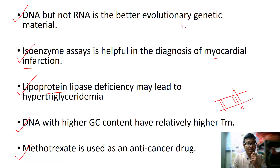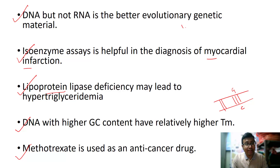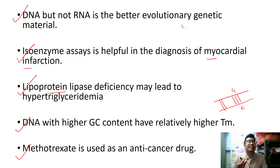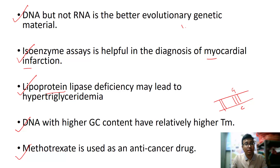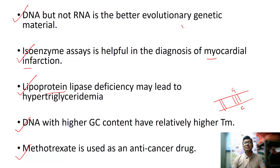Cancer cells require rapid DNA replication and cell growth, so depriving them of tetrahydrofolate prevents replication and ultimately causes cell death. However, methotrexate also targets other rapidly dividing cells in adults, such as hair follicles. This is why patients receiving chemotherapy experience significant hair loss — often becoming completely bald, though this is usually temporary. If asked why methotrexate causes hair loss, explain its mechanism and note that it targets rapidly growing cells including hair follicles.